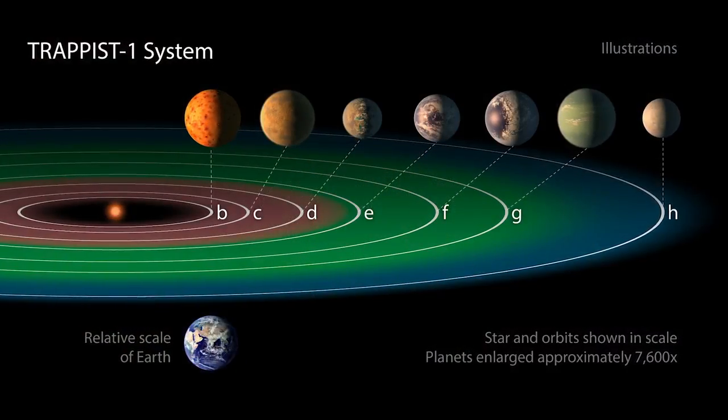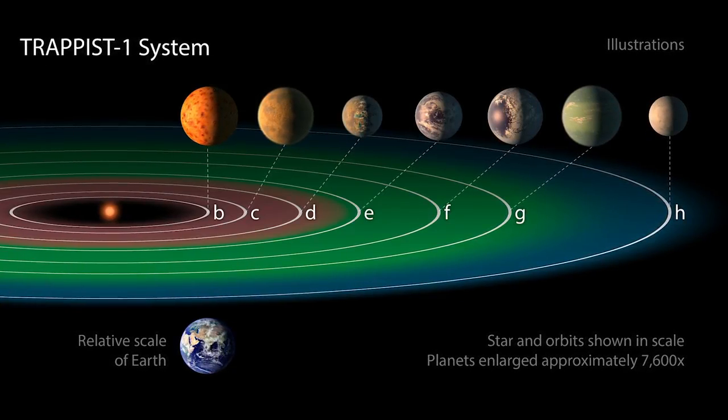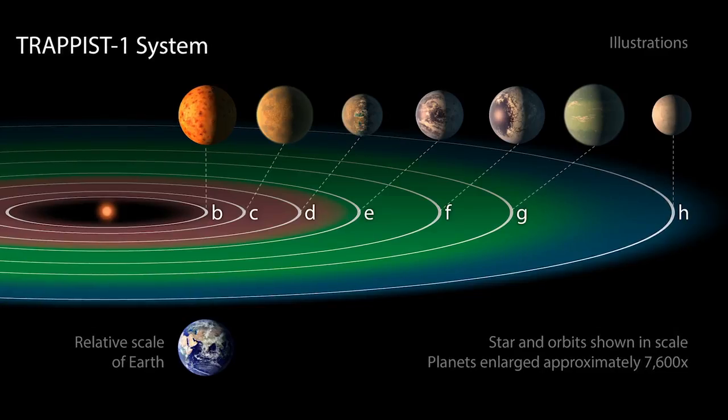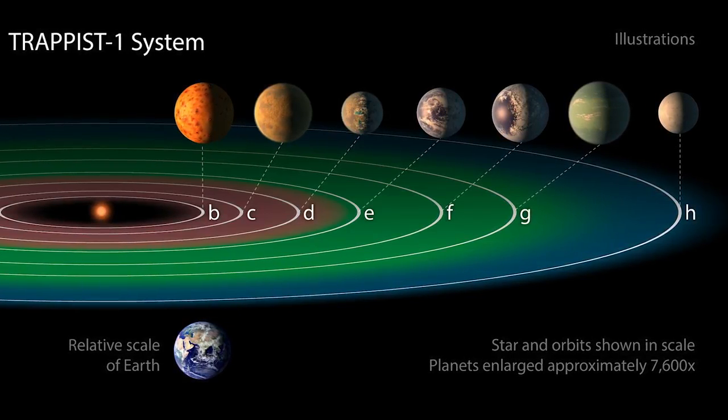Planets E, F, and G orbit at distances where temperatures would allow for liquid water, while D is likely a little too hot. Hubble has yet to take observations of planet H, which is outside the system's habitable zone.